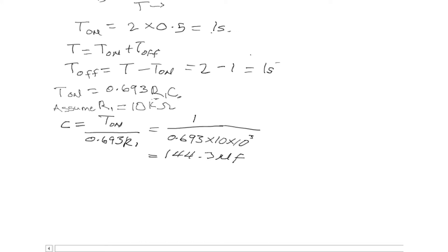We have our capacitance. Now we have our R1, our capacitance. What remains for us is R2. We know that our T_off for astable multivibrator is given as 0.693 R2 C.